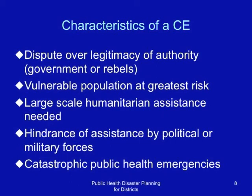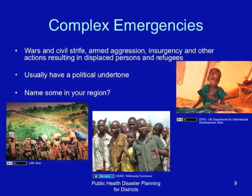Complex emergencies are usually political. They often result in catastrophic public health problems. Complex emergencies often include wars and civil strife, armed aggression, insurgency and other actions resulting in displaced persons and refugees. They usually have a political undertone.